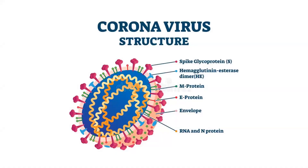Hello everyone. Today I'm going to talk about one glycoprotein located in coronavirus and in some other viruses. Before starting, let's look at the general structure of coronavirus. As you see here, in the coronavirus these things located in the nucleus are the RNA and the proteins wrapping the RNA, which is called N protein, then E proteins are envelope proteins, membrane proteins, and this is hemagglutinin esterase dimer protein. And here, these ones which give the name of the virus because of their crown shape — spike glycoproteins.